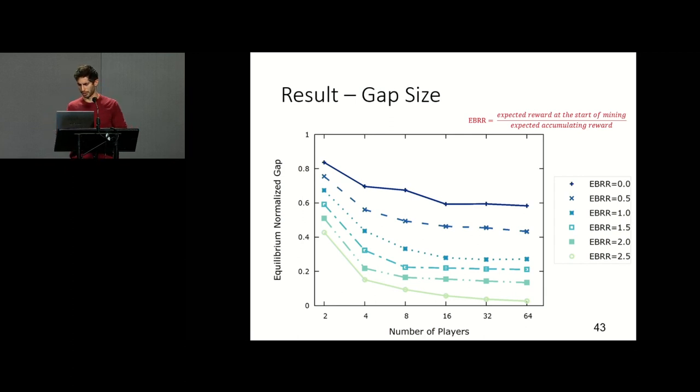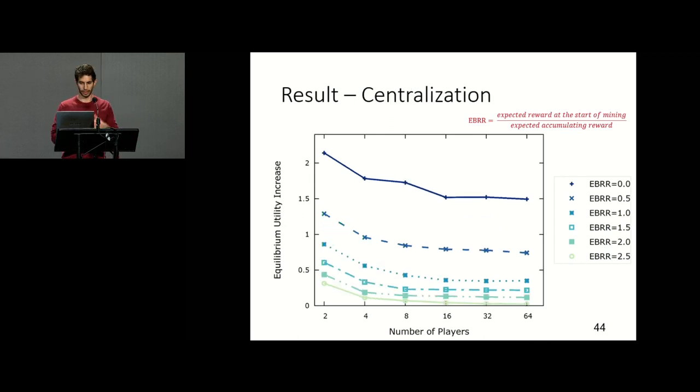Another graph that I'm going to show is about the increasing utility from this optimization. So it has a very similar shape to the previous one. But notice the vertical axis is how much you gain from doing this optimization, how much you profit from actually participating in the gap game. You can see that well obviously you profit from that. And that the less players are in the system and the more dominant the fees, the lower EBRR, you get more by optimizing.